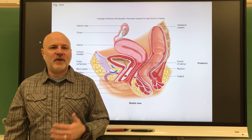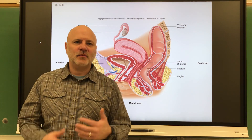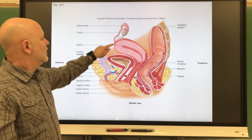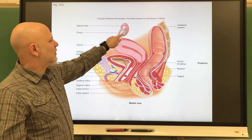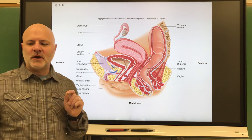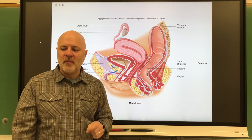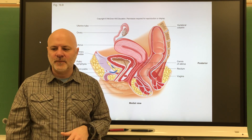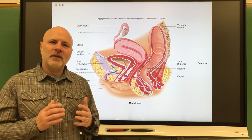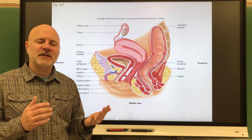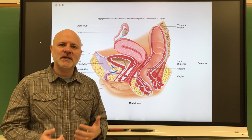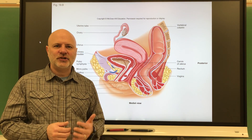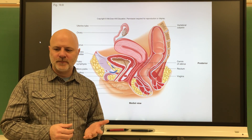Now let's take a look at the female reproductive system. We're going to start with the ovaries. These are the primary reproductive organs of the female because they produce the eggs and the female sex hormones, estrogen and progesterone.